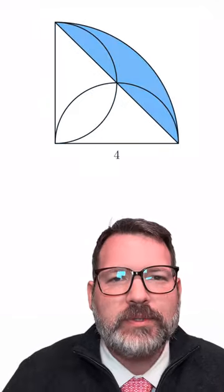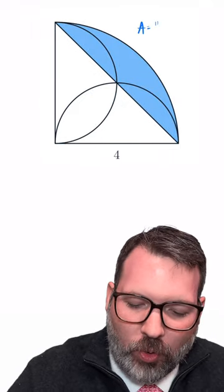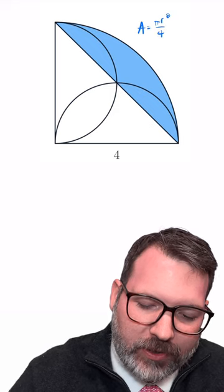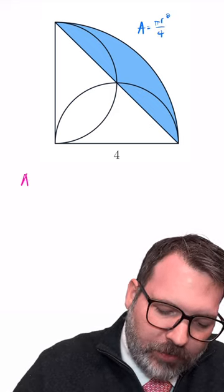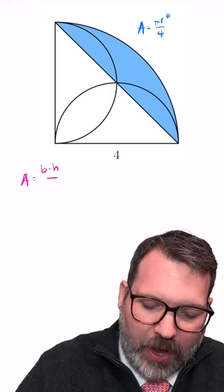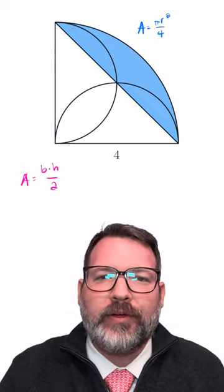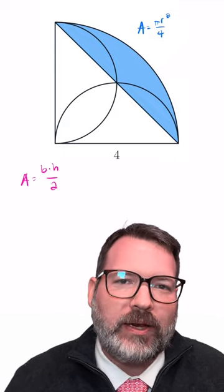When we do that, this becomes the easier question of finding the area of a quarter circle, so that's going to be pi r squared divided by four, and then subtracting away the area of a triangle with of course the classic area formula, base times height divided by two.